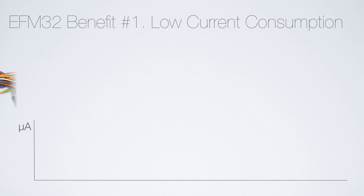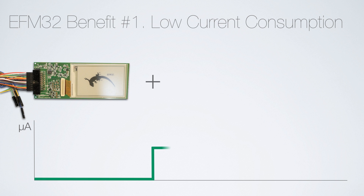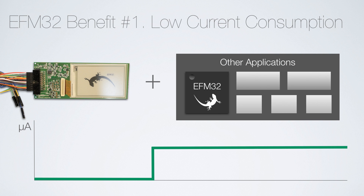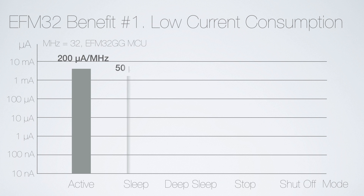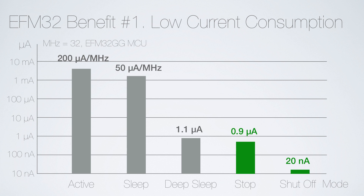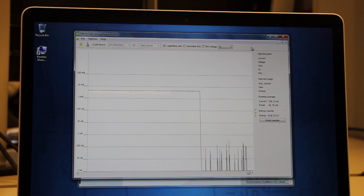As the display draws no current when showing a static image, the current consumption of other parts of the system, including the MCU, becomes more visible. With the low active mode current consumption and sleep modes down to 20 nanoamps, the EFM32 is a good fit for electronic paper applications.